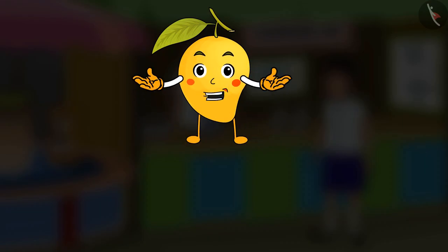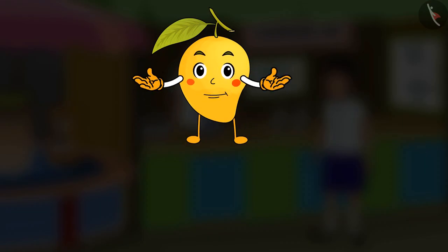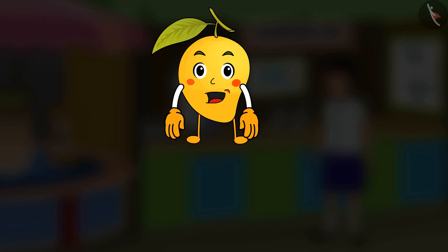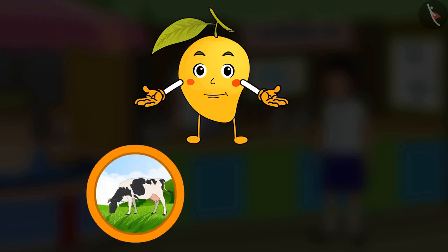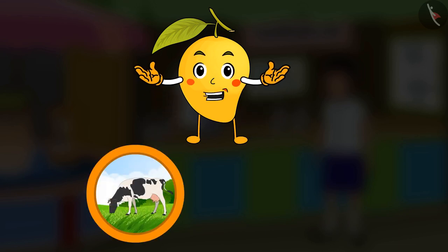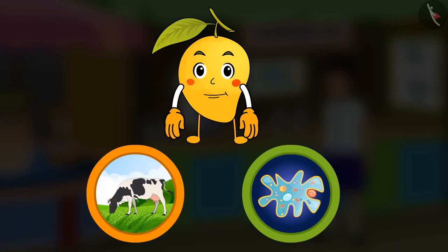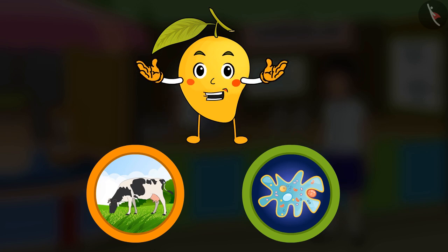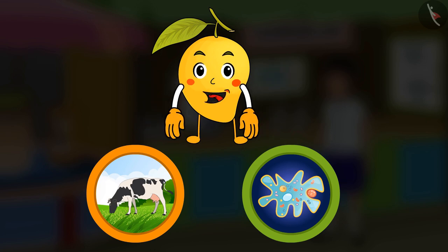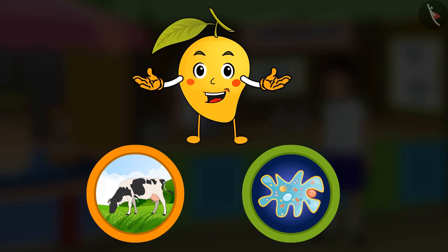So friends, we hope that you have learnt about the digestion of grass-eating animals like the cow, and unicellular animals like amoeba. Next time when you see a cow chewing continuously, you would know why it is doing so. We shall meet in our next video.